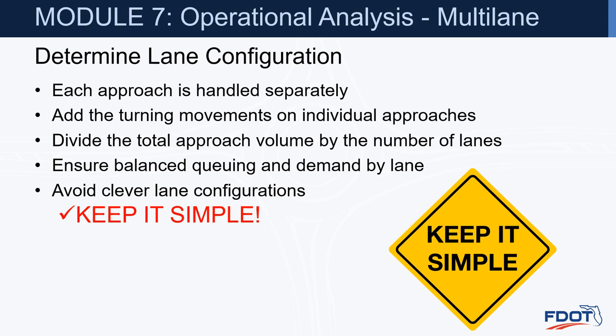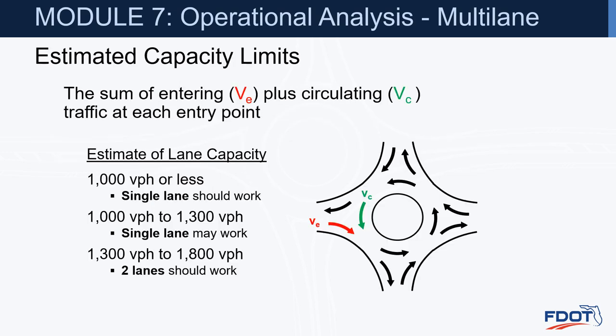Each approach is handled separately. We add the turning movements on individual approaches, divide the total approach volume by the number of lanes, and ensure balanced queuing and demand by lane. We want to avoid clever lane configurations and keep it simple and easy for drivers to use. Estimated capacity limits are the sum of entering plus circulating traffic. If that sum is less than 1,000, a single lane should work; between 1,000 and 1,300, a single lane may work; over 1,300, we're looking at a multi-lane entry.